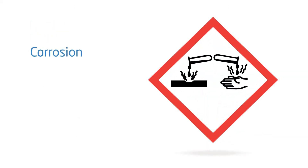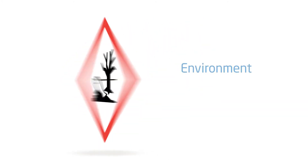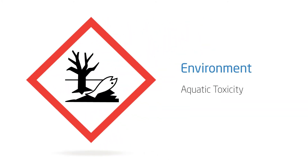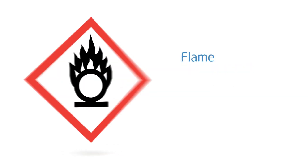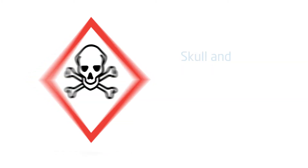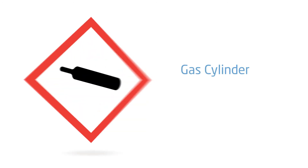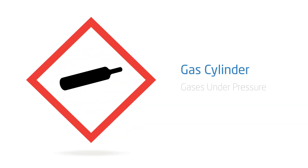The corrosion pictogram indicates skin corrosion, burns, eye damage, and corrosive to metals. The environment pictogram signifies aquatic toxicity. The flame over circle indicates the potential for oxidizers. The skull and crossbones pictogram signifies acute toxicity — fatal or toxic. The gas cylinder pictogram signifies gases under pressure.